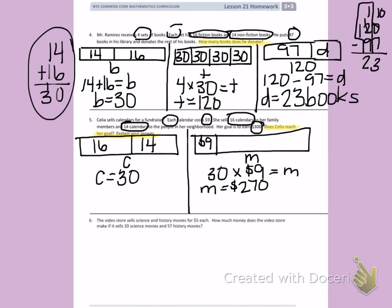Number 6. The video store sells science and history movies for $5 each. How much money does the video store make if it sells 33 science movies and 57 history movies?